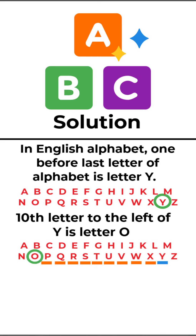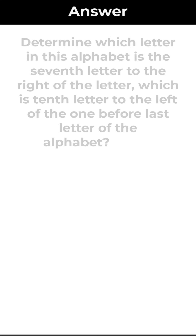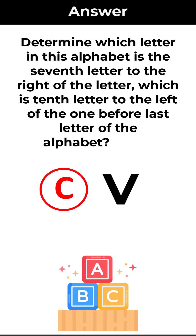Now we need to determine the 7th letter to the right of the letter O. Let's do the math: 1, 2, 3, 4, 5, 6, and 7. As you can see, this is the letter V. So the correct choice here is choice C, letter V.